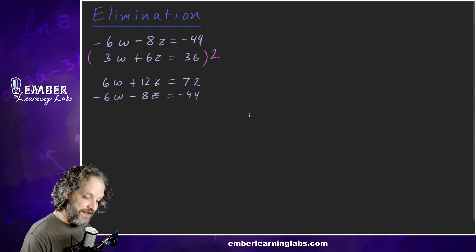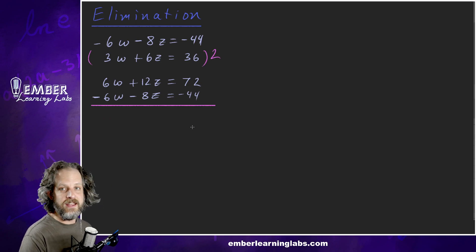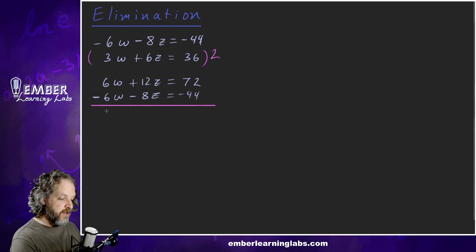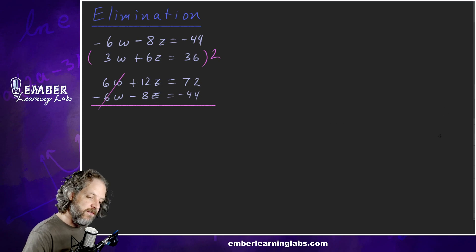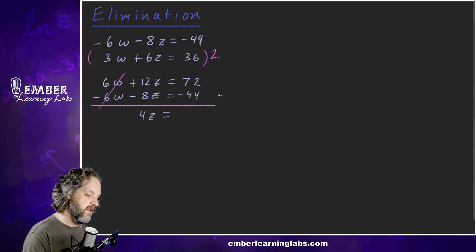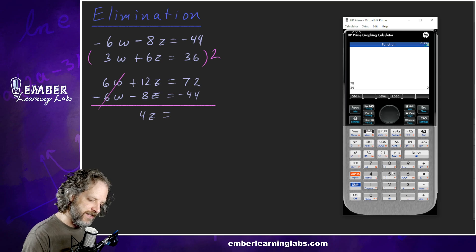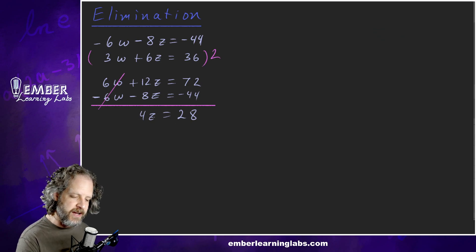Now they're opposites. Now here's where the addition method comes in. So what we're going to do now is we're going to add each one of these pieces up. What's going to happen to these w's? Six w plus negative 6w, it cancels. That whole variable is going to go away, which is our goal. So 12z minus 8z is 4z. So we've got 4z equals 72 minus 44. How about we pull out the calculator on that one? 72 minus 44 equals 28 matches what we're thinking. So that looks good.